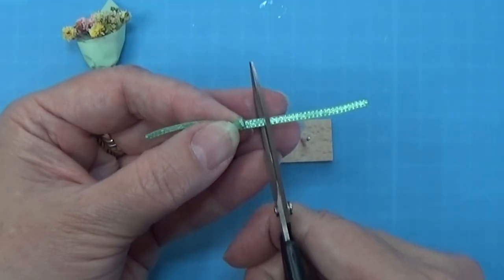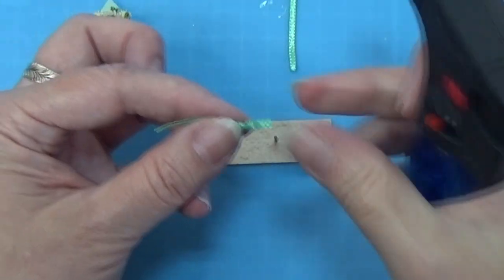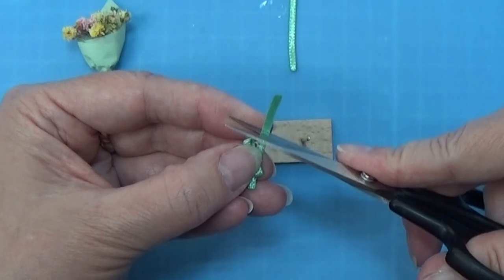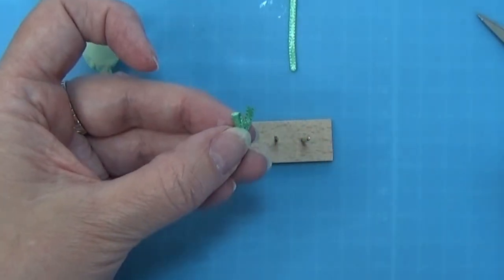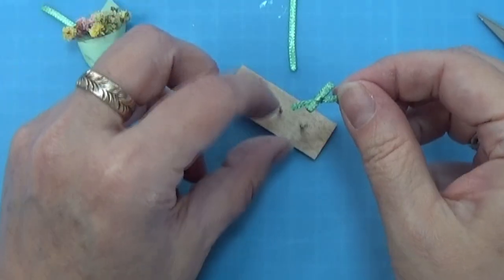Into the length, and I am using my blow torch here just to make sure that the ribbon is not fraying at all.